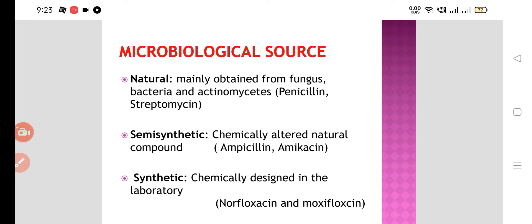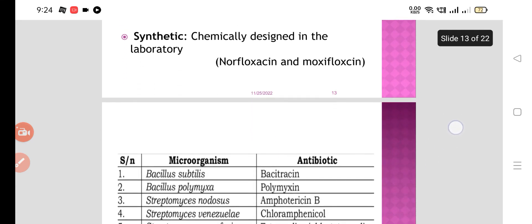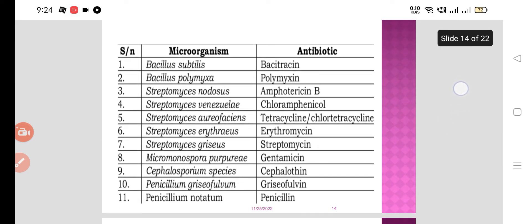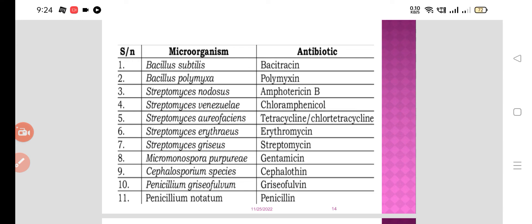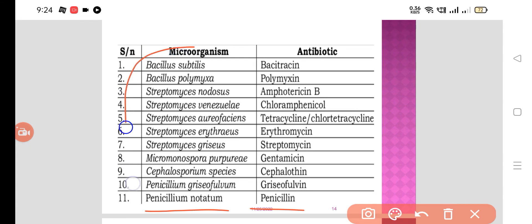Synthetic antibiotics are chemically designed in the laboratory. Examples include norfloxacin, moxifloxacin — these are pure synthetic drugs like fluoroquinolones, chemically designed in laboratories. Semi-synthetic antibiotics like ampicillin and amikacin involve chemical modification of natural compounds. These are the sources of various antibiotics. The first drug, penicillin, is obtained from Penicillium notatum.